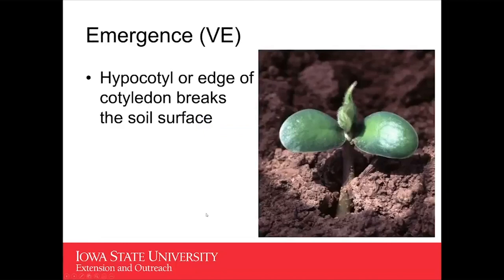Moving into the staging of soybeans, our first stage is the emergent stage. What we're looking at here is when the hypocotyl — the stem or the edge of those cotyledons — breaks the soil surface. The hypocotyl as it is growing and elongating is basically pulling those cotyledons out of the ground. A lot of times you will see the crook of the hypocotyl break the soil surface before the cotyledons do, and that's when we would consider that emergence has at least started.